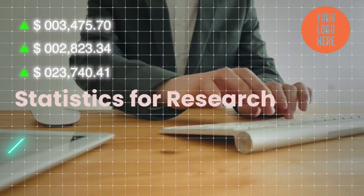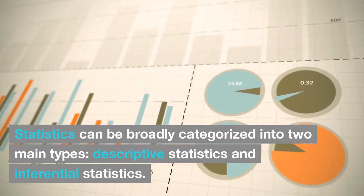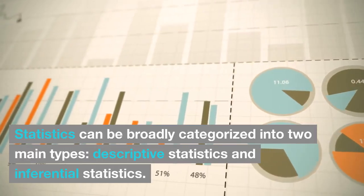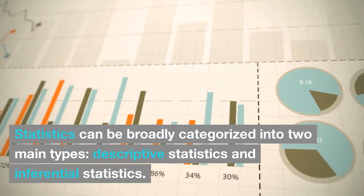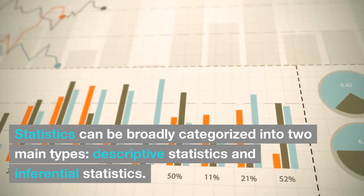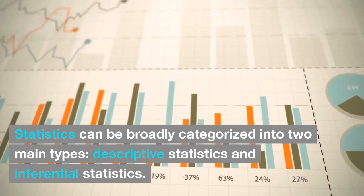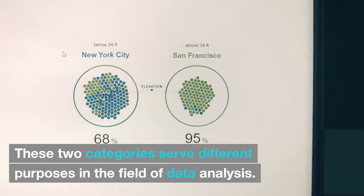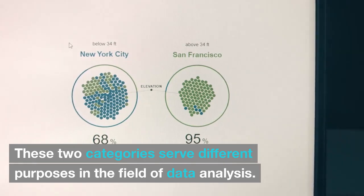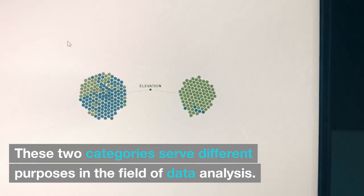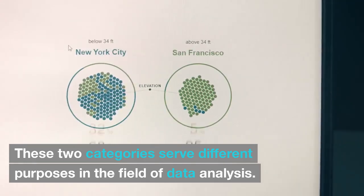Statistics for research. Statistics can be broadly categorized into two main types: descriptive statistics and inferential statistics. These two categories serve different purposes in the field of data analysis.